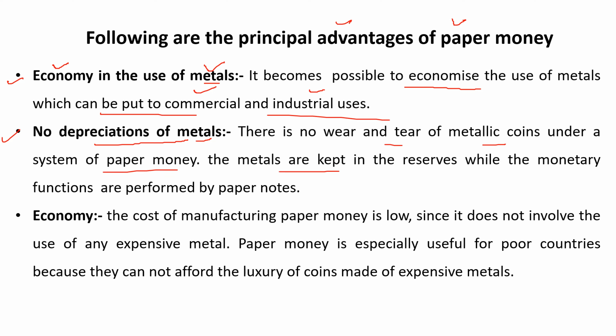The metals are kept in reserves while the monetary functions are performed by paper notes. A large quantity of paper currency can be issued while only a small amount of gold needs to be kept in reserve. Today, under the minimum reserve system, there is about 200 crores in reserve — approximately 115 crores of gold reserve and 85 crores of foreign exchange reserve.